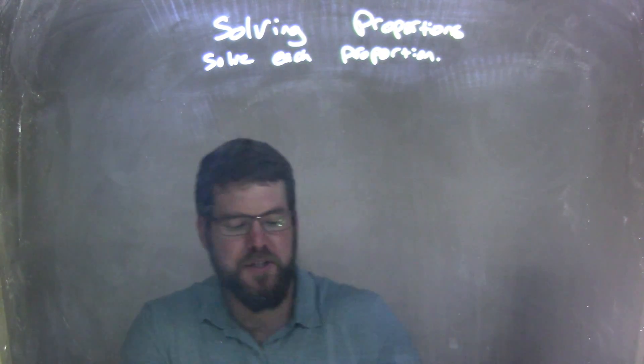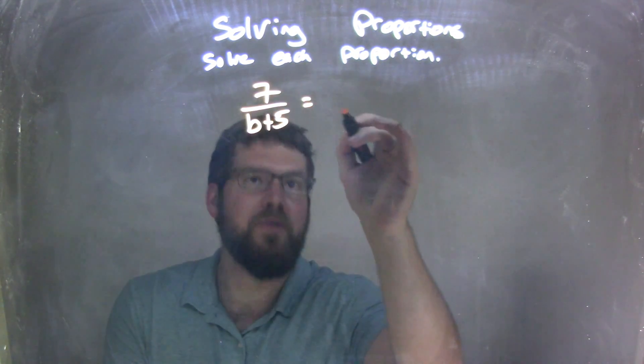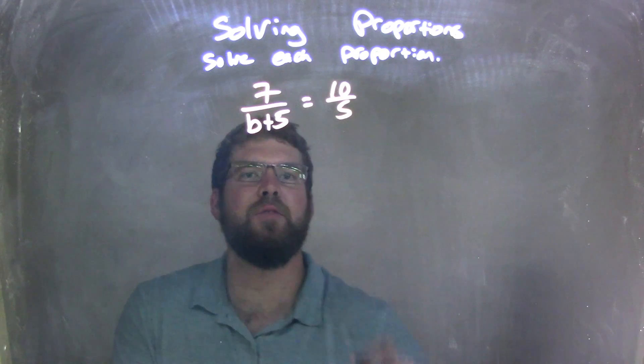If I was given this proportion here, 7 over b plus 5, and that equals 10 over 5.